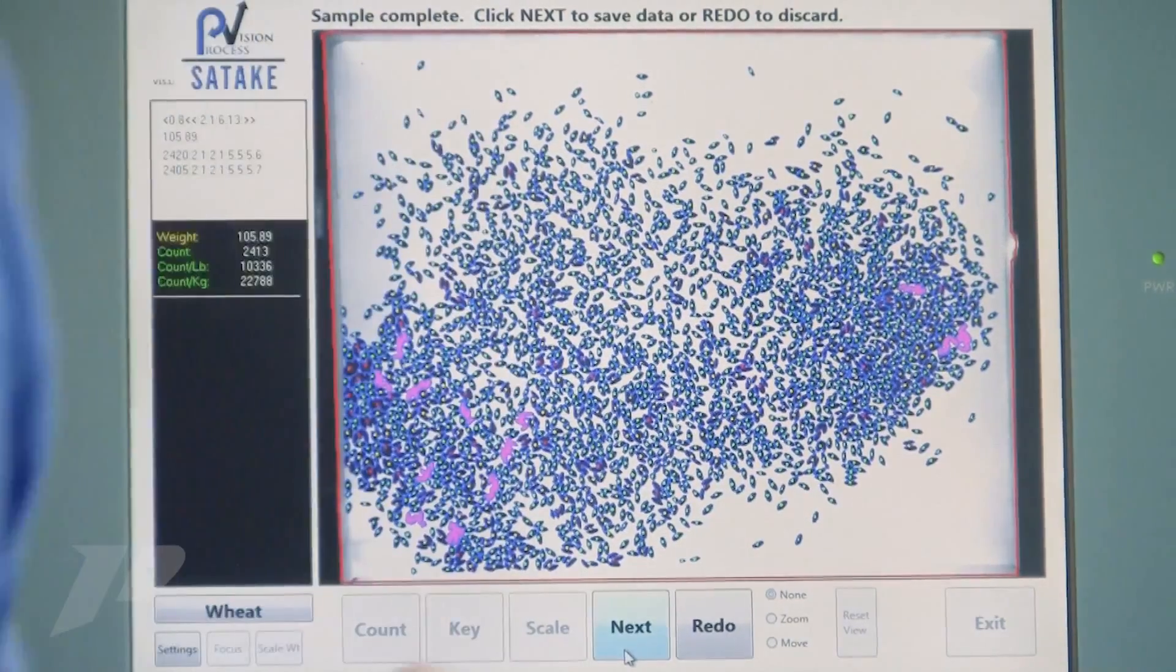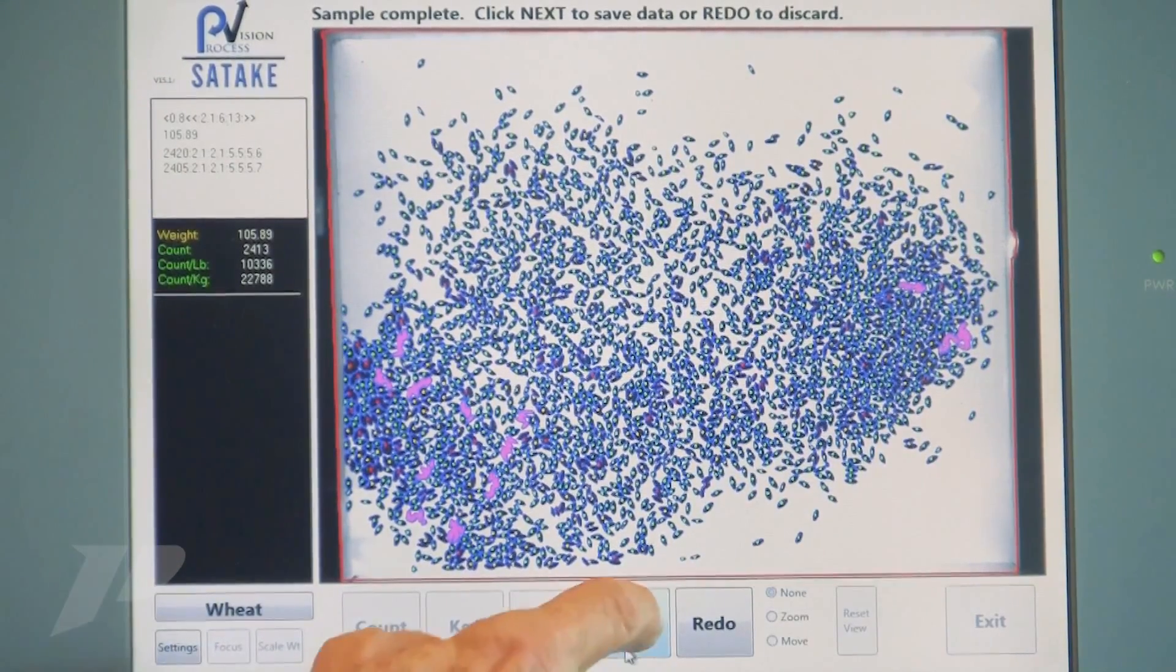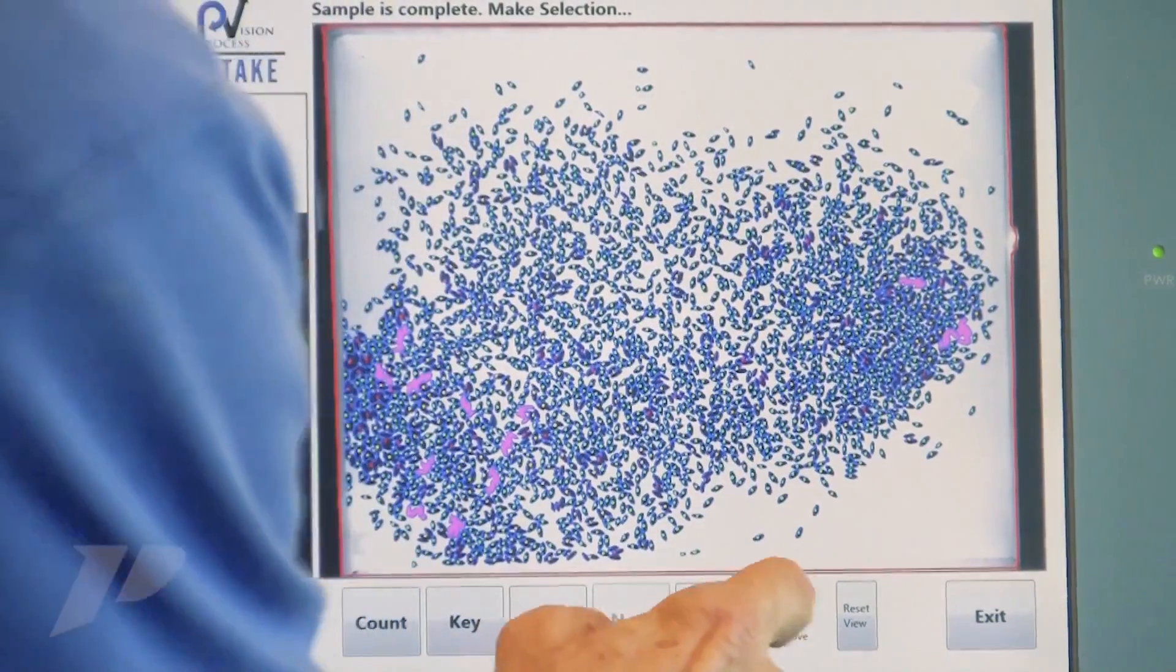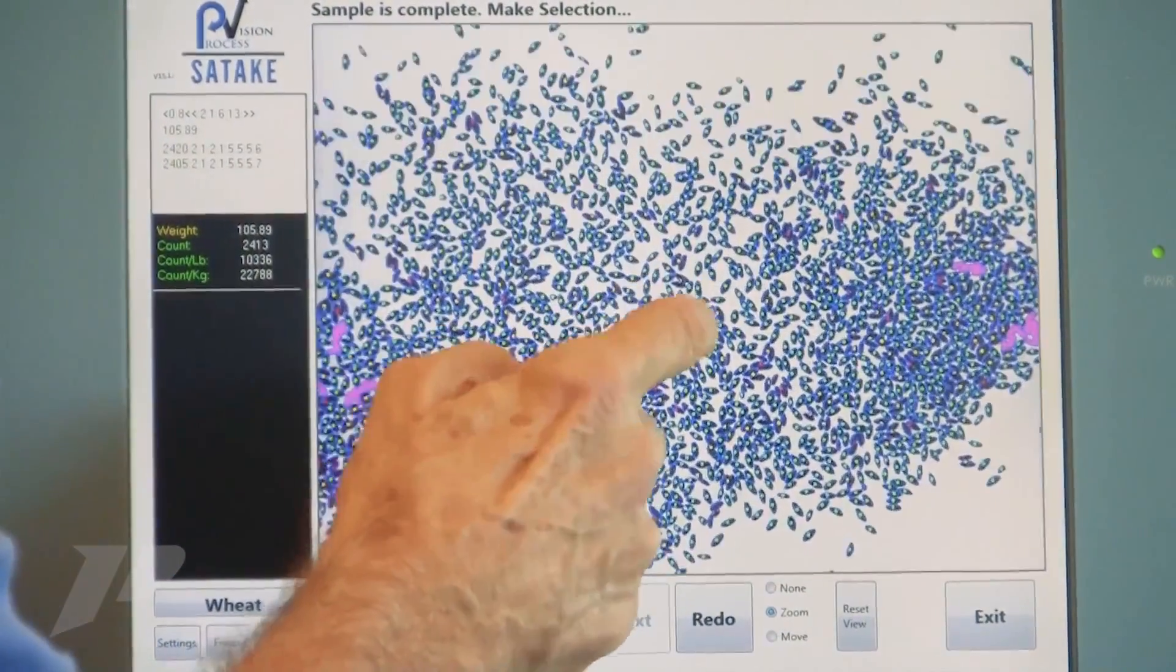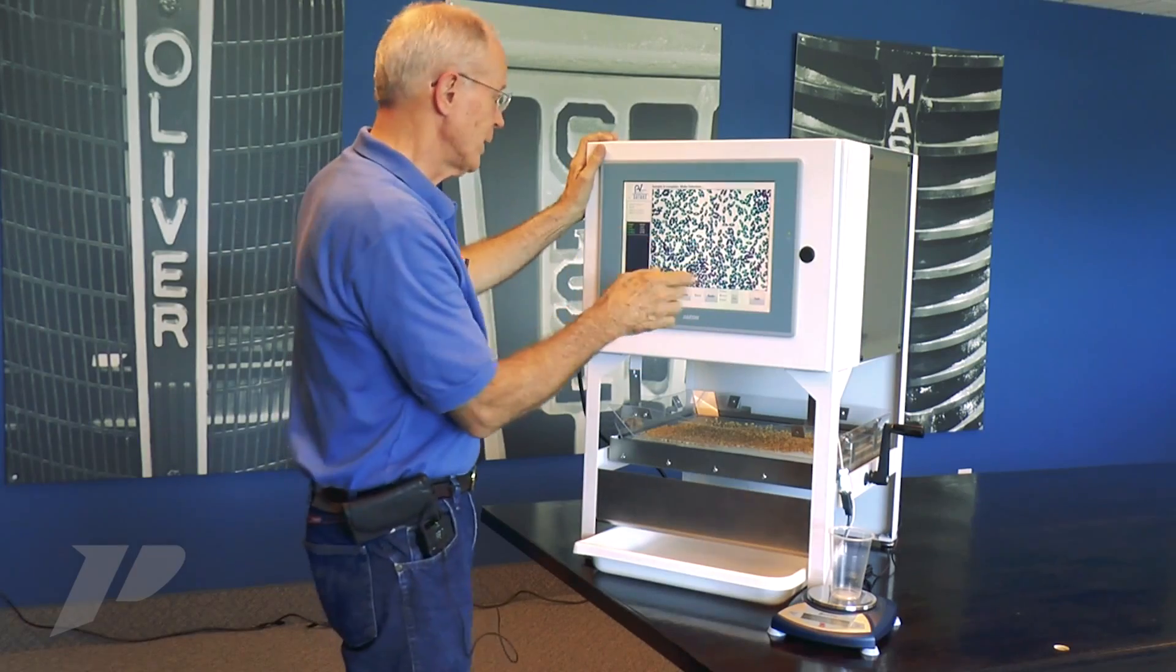And the second count is within 15 kernels for a 2400 kernel count. We're within plus or minus seven and a half, which is close enough for the settings we have here. So we will accept that product. We'll say next. If we want to look at that, we can zoom in. Click the zoom button and I'll zoom in a little bit on the stage.